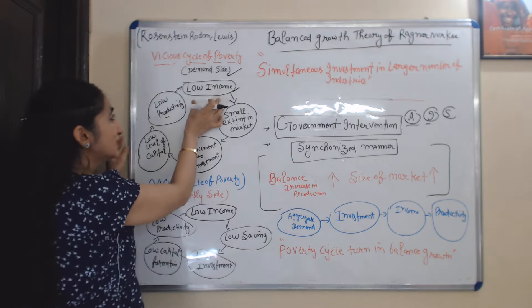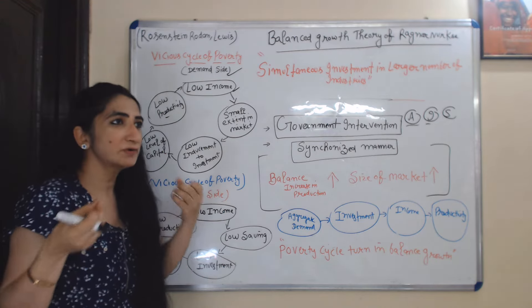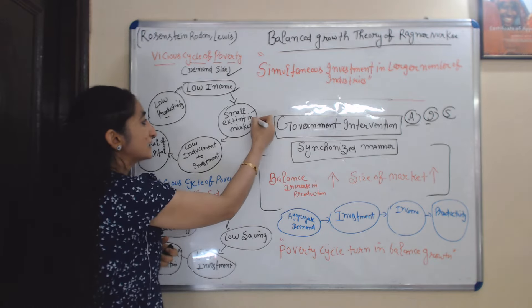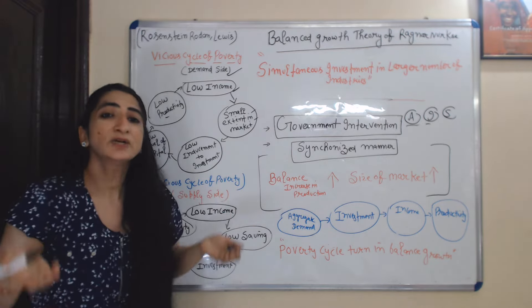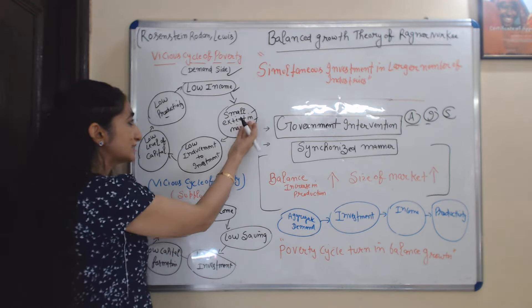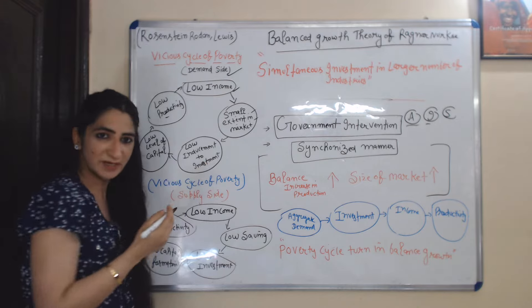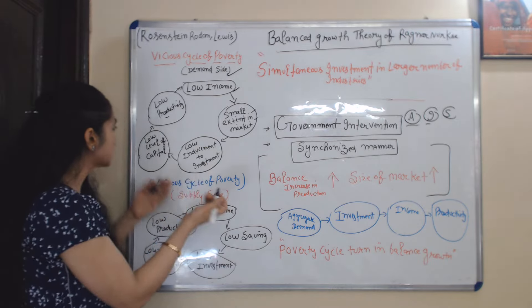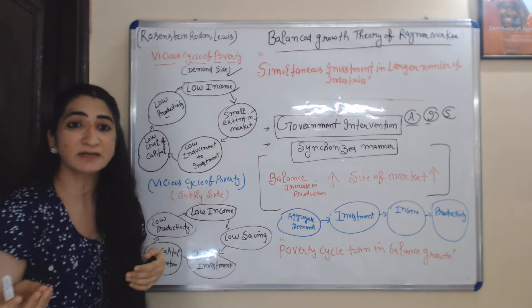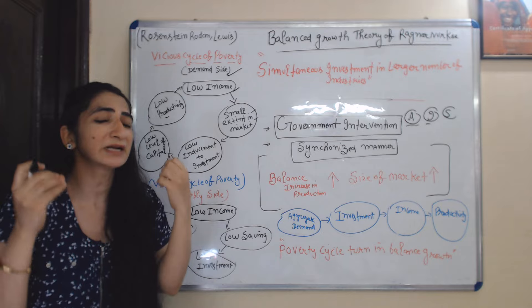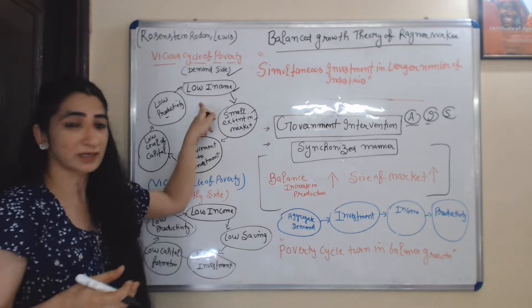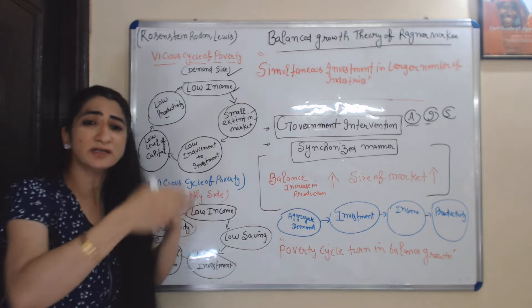On the demand side, underdeveloped countries have low income. Because of low income, there is low demand. Low demand leads to a small, limited market. A small market leads to low induced investment. Low induced investment leads to a low level of capital. A low level of capital results in low productivity, as organizations are not able to utilize the maximum skills of labor. As a result, it leads to low income, and this cycle continuously runs.